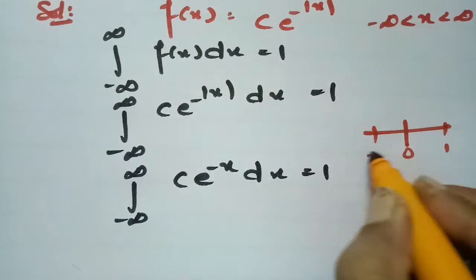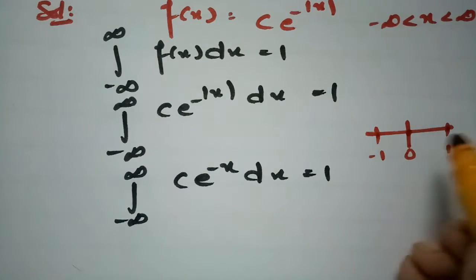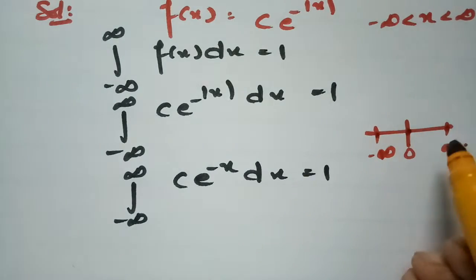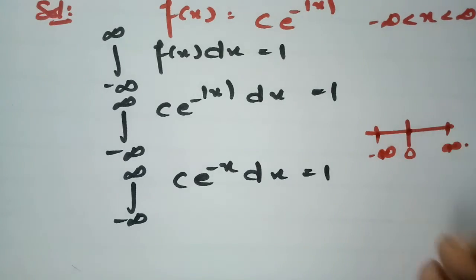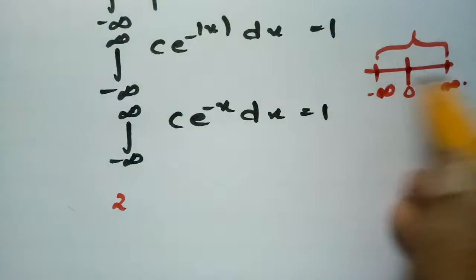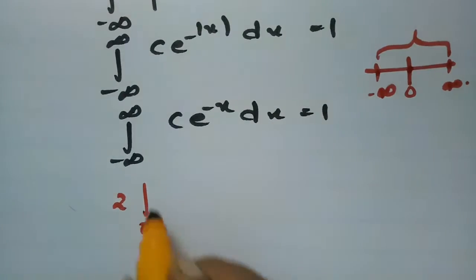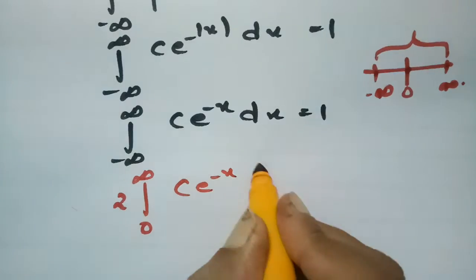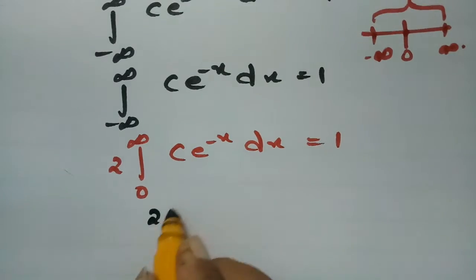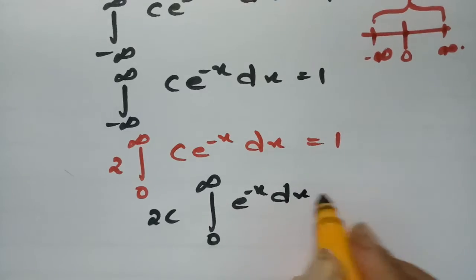Because the function is symmetric — the distance from minus infinity to 0 is the same as from 0 to infinity — we can write the integral as 2 times the integral from 0 to infinity of c·e^(-x) dx equals 1. Since c is a constant, we bring it outside: 2c times the integral from 0 to infinity of e^(-x) dx equals 1.